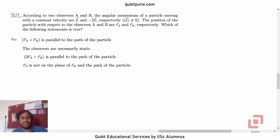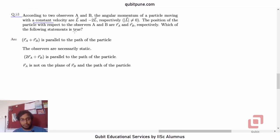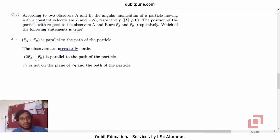According to two observers A and B, the angular momentum of a particle moving with a constant velocity are L̄ and -2L̄ respectively, and it is not a null vector. The position of the particle with respect to the observers A and B are R̄_A and R̄_B respectively. Which of the following statements is true? Option A: R̄_A + R̄_B is parallel to the path of the particle. Option B: The observers are necessarily static, meaning their velocity is zero. Option C: 2R̄_A + R̄_B is parallel to the path of the particle. Option D: R̄_A is not on the plane of R̄_B and the path of the particle.